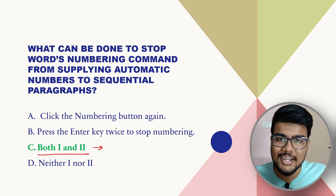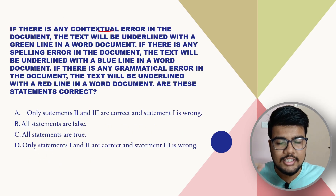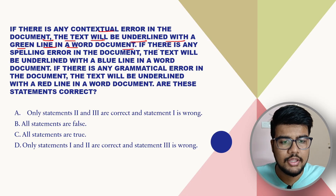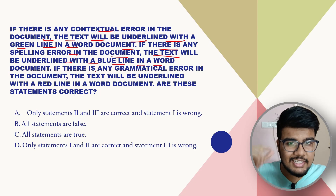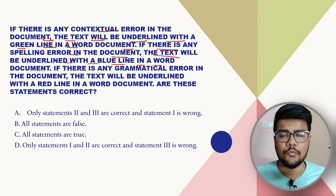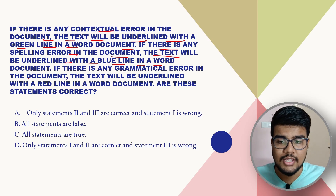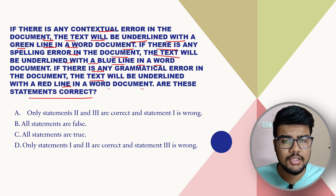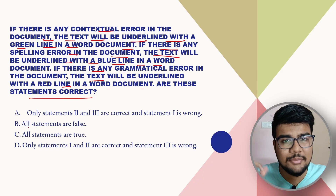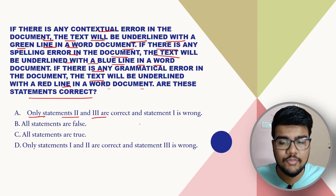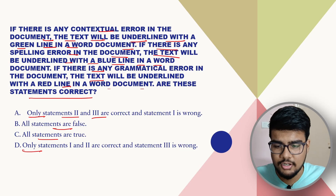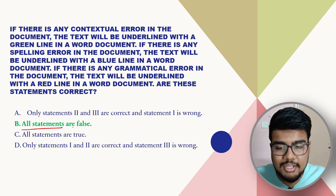If there is any contextual error in a document, the text will be underlined with a green line in Word. If there is any spelling error, the text will be underlined with a blue line. If there is any grammatical error, the text will be underlined with a red line. Are these statements correct? The answer is B — all statements are false.